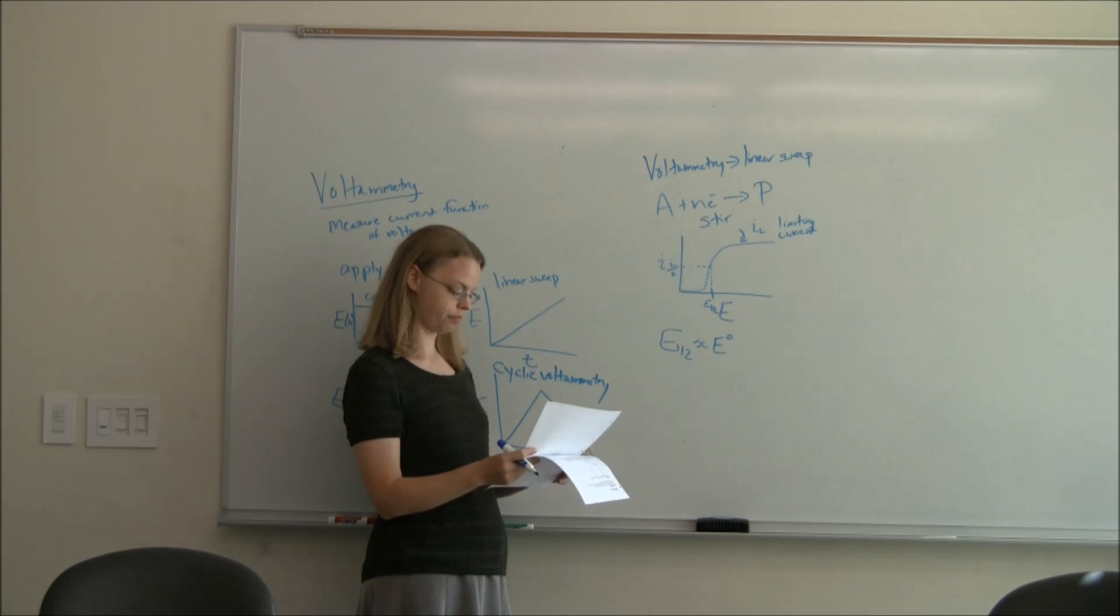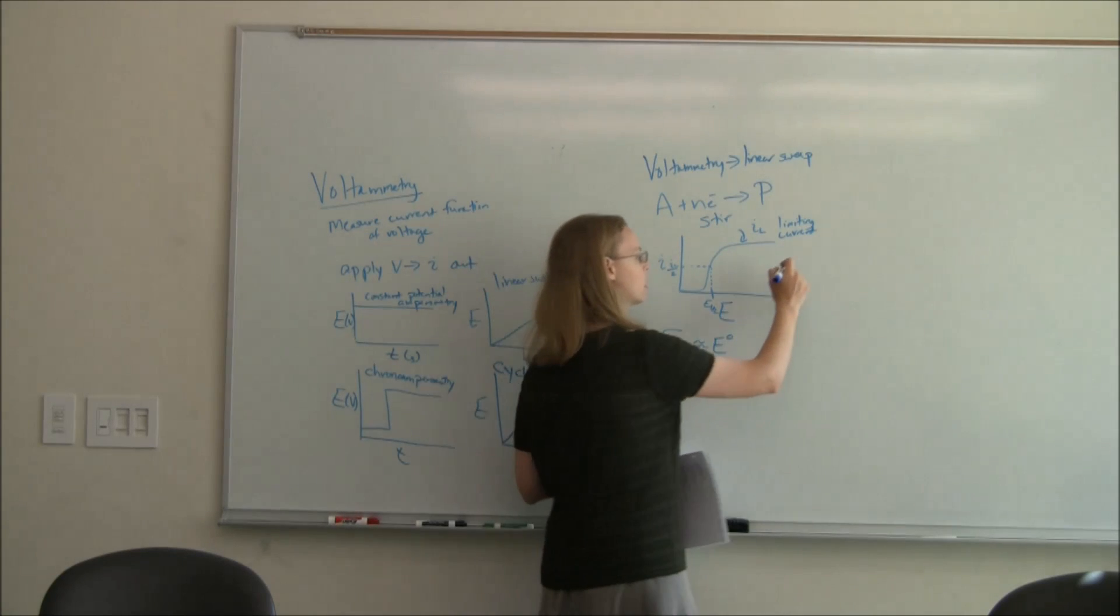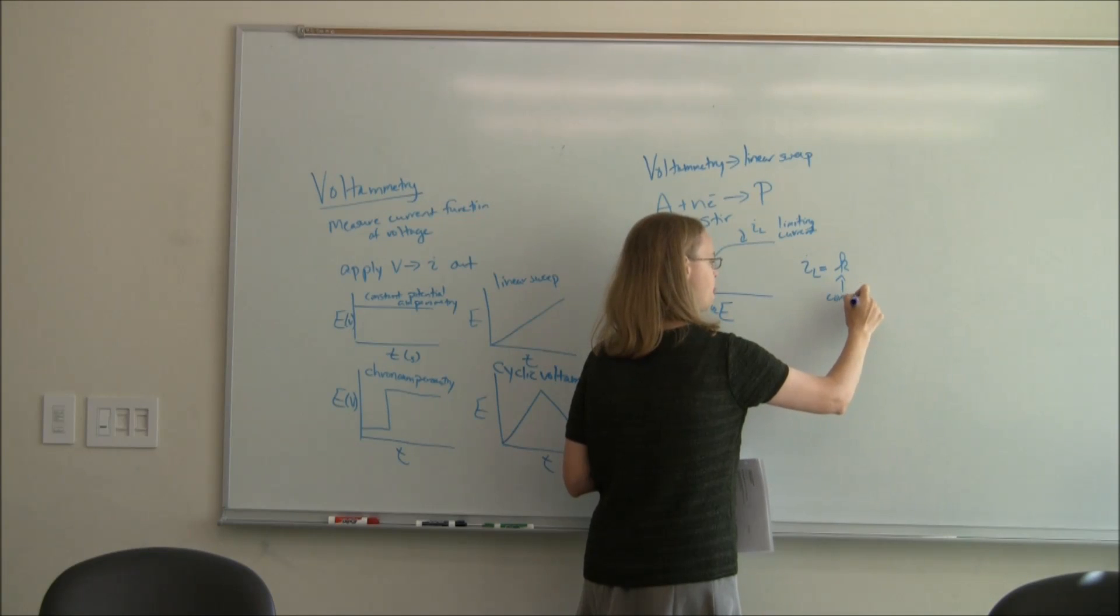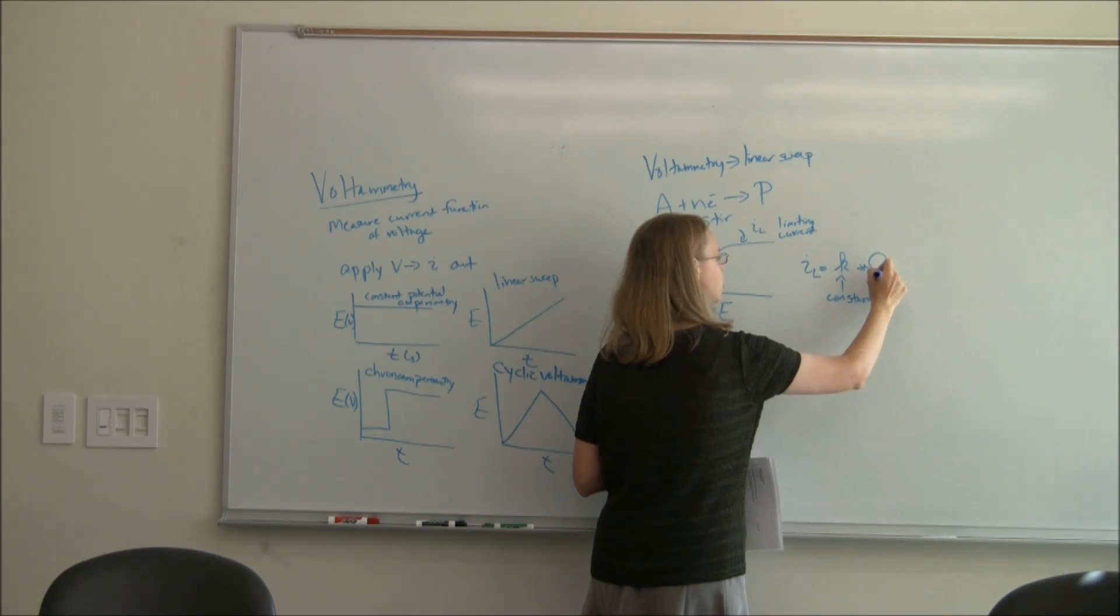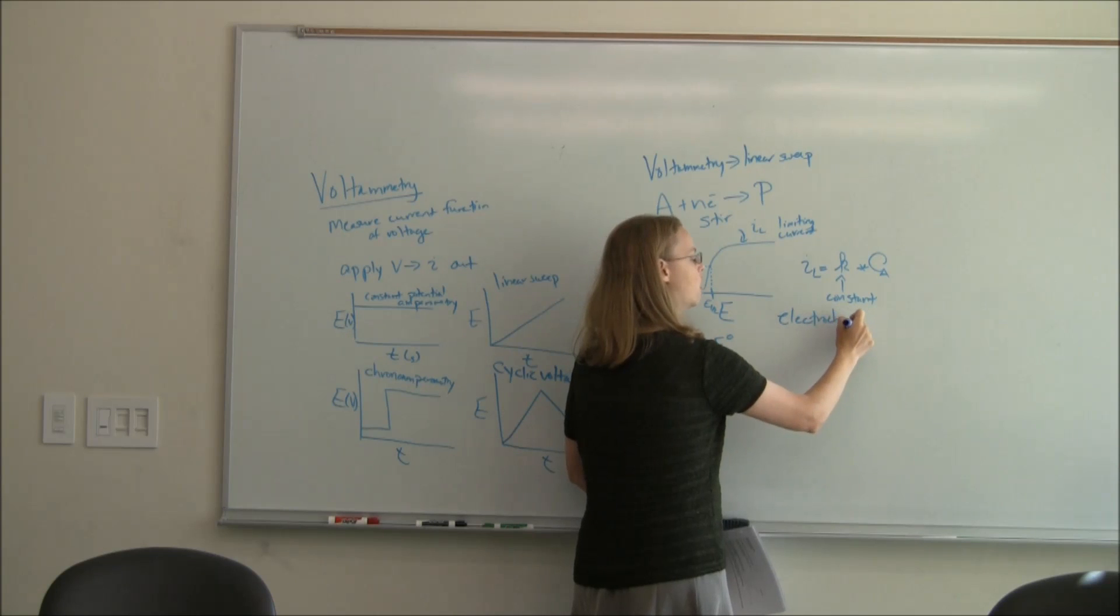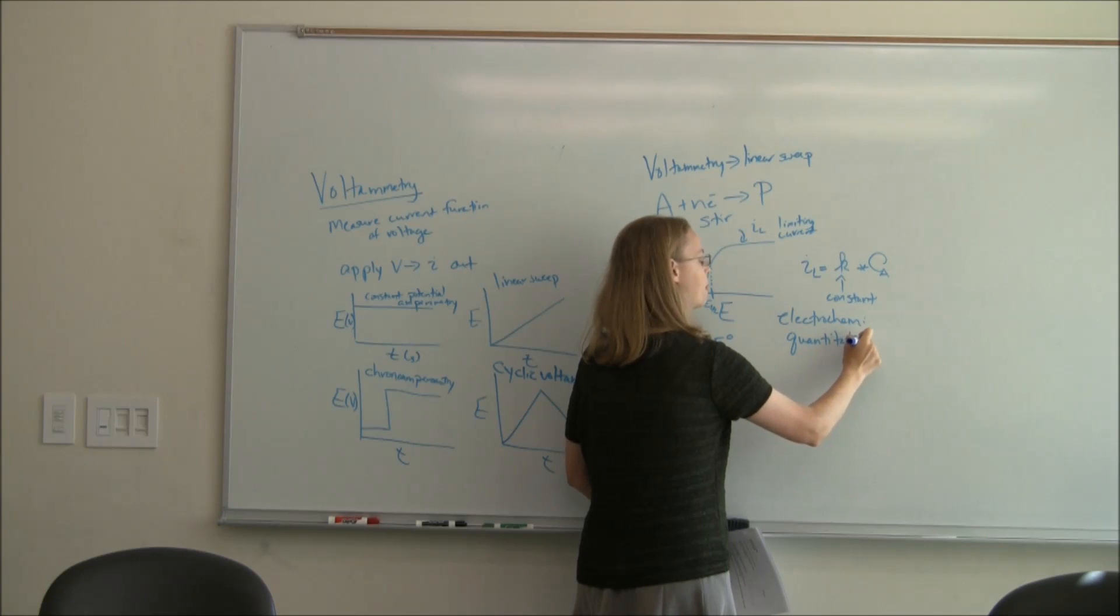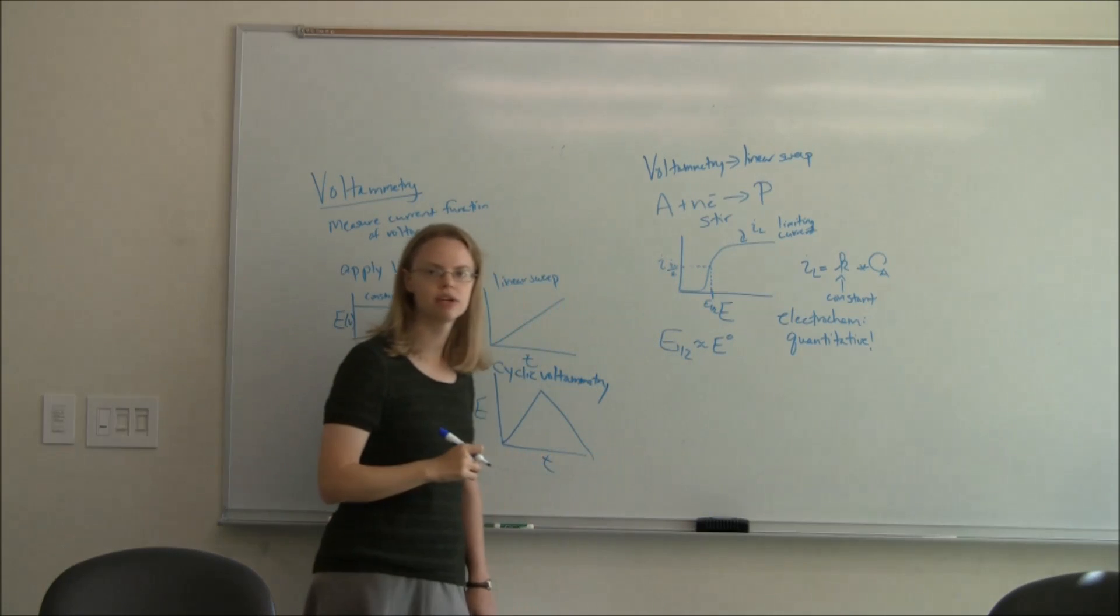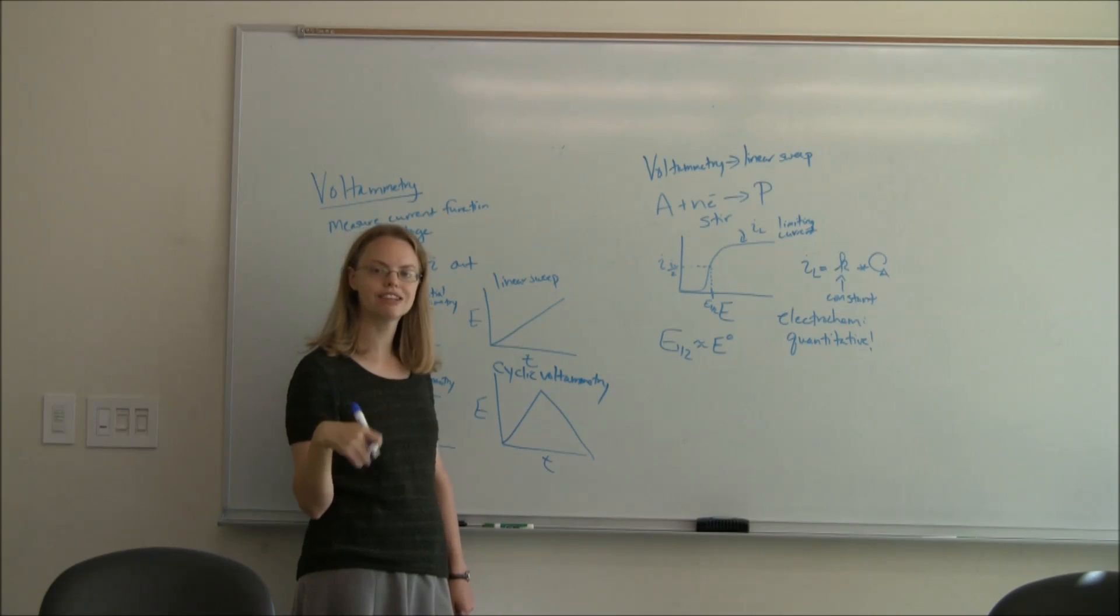That's the E one half. It tells you about the thermodynamics again, if you watched the basic electrochemistry lecture. E zero tells you about the thermodynamics of the reaction. So we can get that out. Limiting current is governed sort of by kinetics, and so the limiting current is equal to some sort of constant, and we'll talk about what this constant is in a minute, times the concentration of A. So that makes electrochemistry quantitative.